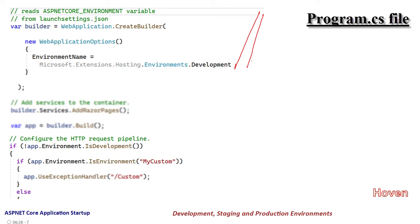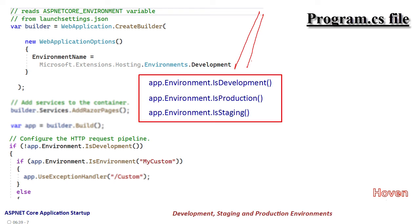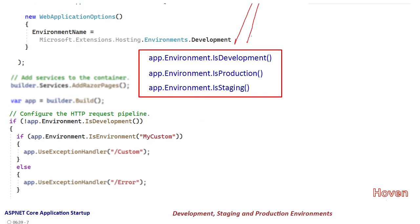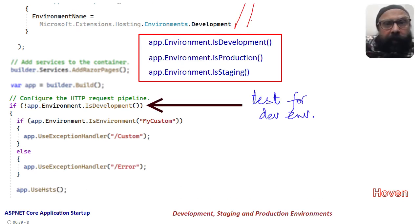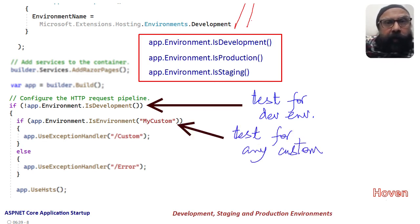Let us now see conditional configuration in ASP.NET Core — how these environments are used for conditional settings. ASP.NET Core allows us to configure app behavior on the basis of production, staging, and development environments. This code shows how to test for an environment other than development and apply relevant settings. There is a general-purpose method that allows us to test for any custom environment string, such as "mycustom". A simple if-else can be used to set alternate configuration settings.